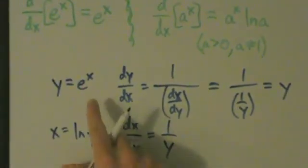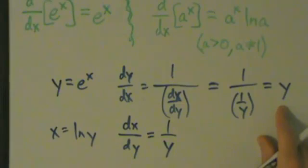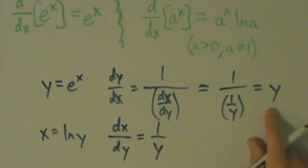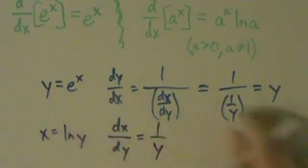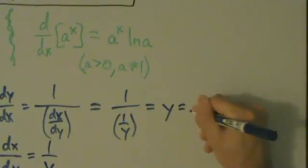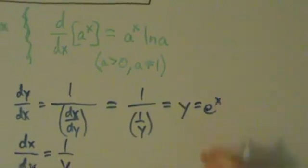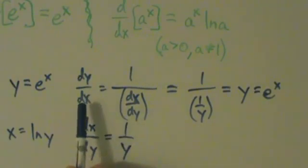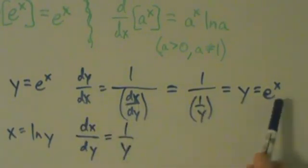But our variable here is x, so we don't want to end with y, we want to express things in terms of x. But what is y? It's just e to the x, so this equals e to the x, right?